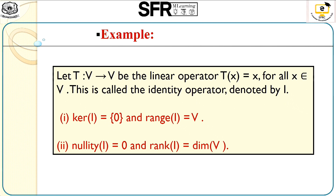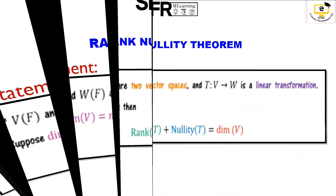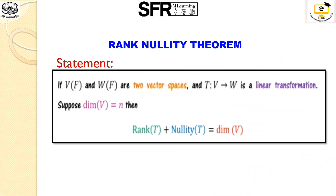Now an important theorem: the rank-nullity theorem. Its statement is: if T is a transformation from two vector spaces V and W over the field F, and if the dimension of V equals N, then the sum of rank T plus nullity T will be equal to the dimension of V. That is, rank T plus nullity T equals dimension of V. Now let's see its proof.